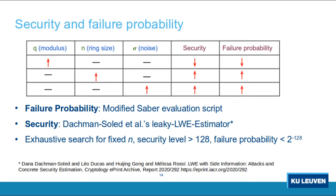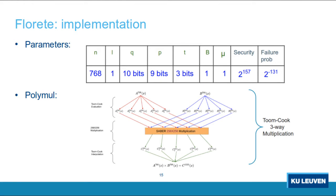To find failure probability, we modified the Saber script, and for security evaluation we used Ducas et al.'s Leaky LWE estimator. We obtained the final parameter sets by exhaustively searching over all possible values while keeping N fixed, targeting bit security ≥ 128 and failure probability strictly less than 2^{−128}. For Florete, N = 768, matrix dimension L = 1, ring modulus Q = 10 bits, rounded modulus P = 9 bits, T = 3 bits, B = 1 (one ciphertext coefficient per message bit), and centered binomial distribution with μ = 1. This yields 157-bit security and failure probability 2^{−131}. The 768×768 polynomial multiplication uses a hybrid Toom-Cook 3-way on top of Seward's efficient 256×256 multiplication, combining Toom-Cook, Karatsuba, and schoolbook methods.